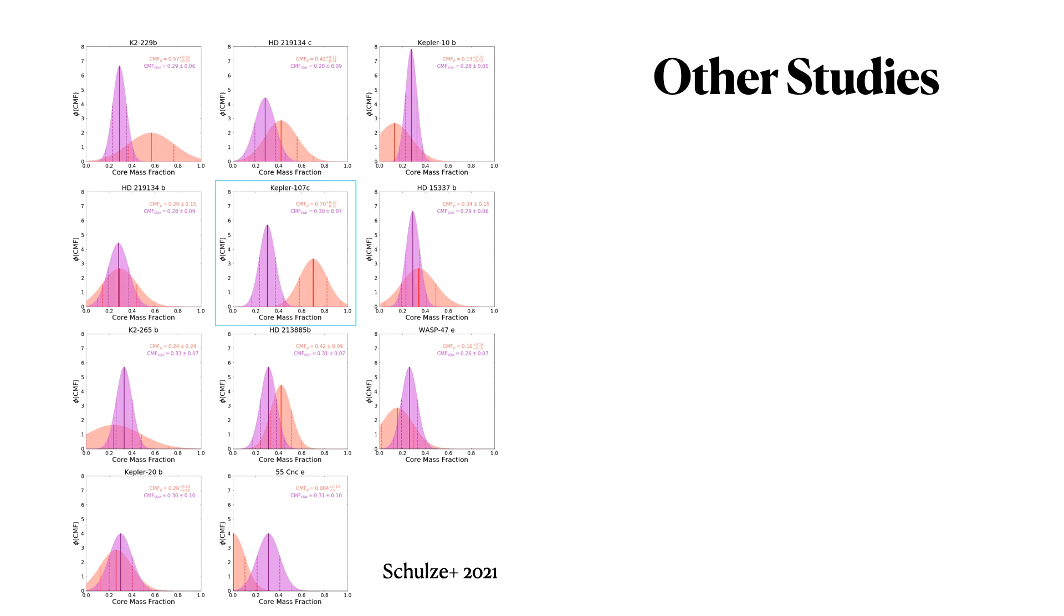Since then there's been other studies that have followed and are complementary to our work. So this is work by Schulze 2021, hopefully I pronounced the name correctly. Where they looked at planets, all of them are in our sample actually, but they looked at their host stars as well. And they concluded, for example, for Kepler 107c that there's clear distinction, but in the other ones they don't think there is enough of a distinction to say they're not primordial. My conclusion is that the data is just not there yet to completely make definite conclusions.